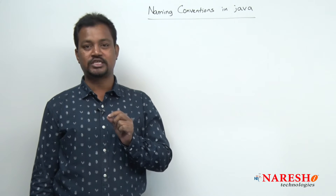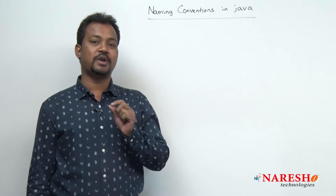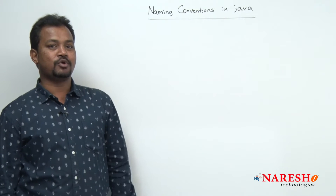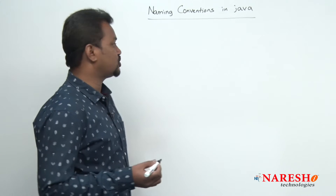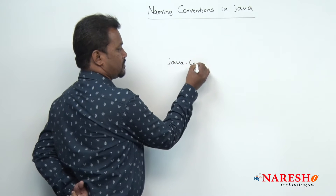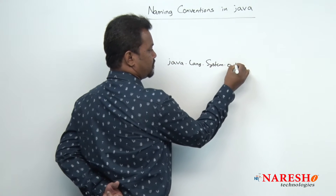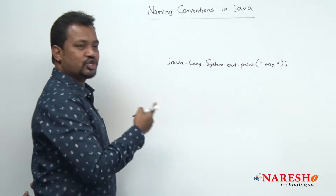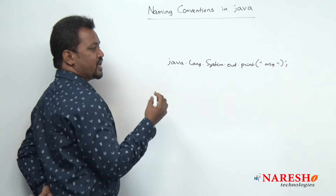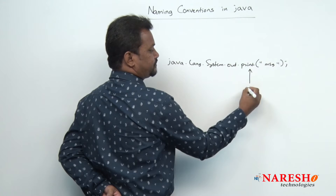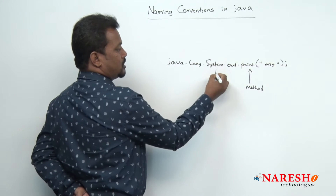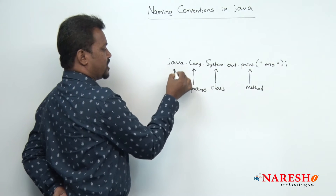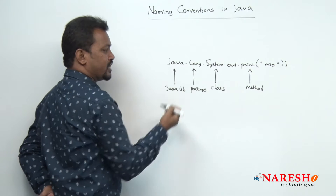In the last video, we discussed about the print method. The print method displays a message, result, or combination of both. In the process of writing a print method, we recorded it like: java.lang.system.out.print and some message. This is one complete syntax of your instruction — calling it as method, class, package, and java library respectively.